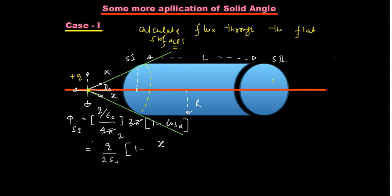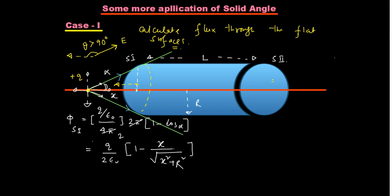Here cos α means x divided by the hypotenuse, which is √(x² + R²). One more very important aspect: the electric field lines are going outward from the charge, whereas the area vector for surface 1 points inward — they are opposite to each other. The angle θ between E and dA is obtuse (greater than 90°), so cos θ is negative, meaning this flux through S1 is actually negative flux.